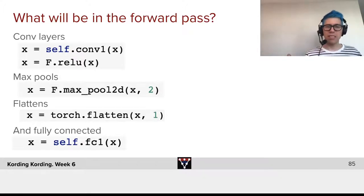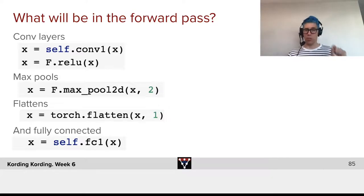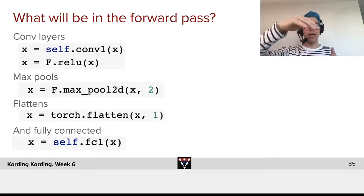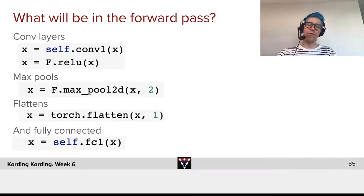We will also sometimes need flattened operations. Where do we need flattened operations? Now, if we have a ConvLayer, a set of convolutions, and then afterwards we want to go into fully connected, that often requires us to do a flattened operation.